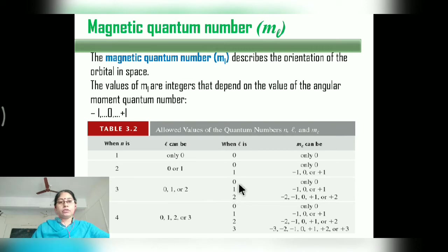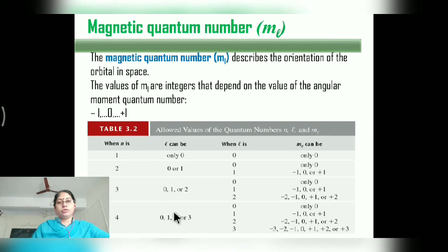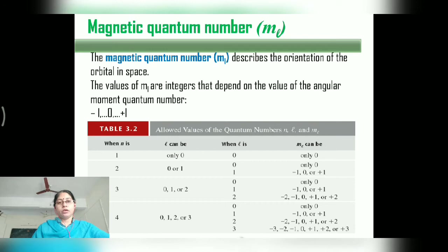Continuing with N=3: for L=0, ml=0; for L=1, ml = −1, 0, +1; for L=2, ml = −2, −1, 0, +1, +2. If N equals 4, the L values are 0, 1, 2, and 3. For L=0, ml=0; for L=1, ml = −1, 0, +1; for L=2, ml = −2, −1, 0, +1, +2; for L=3, ml = −3, −2, −1, 0, +1, +2, +3.